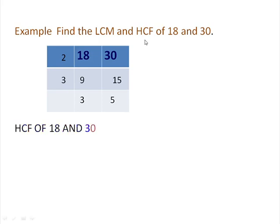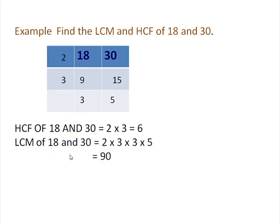Let us start with HCF. The HCF of 18 and 30 is 2 multiplied by 3 — we multiply only the common factors — so HCF of 18 and 30 is 6. Now to find LCM of 18 and 30, first multiply the common factors 2 and 3, then multiply the uncommon factors 3 and 5.